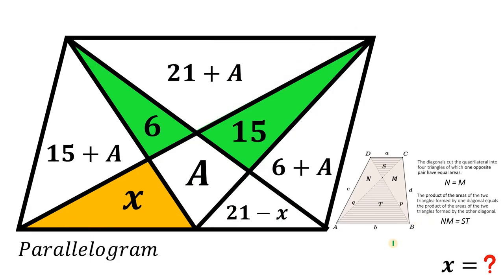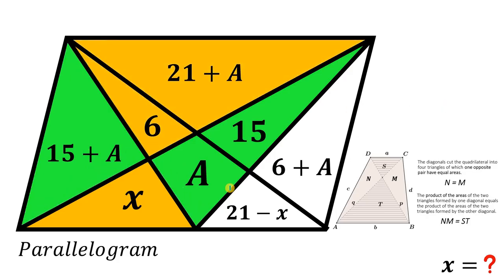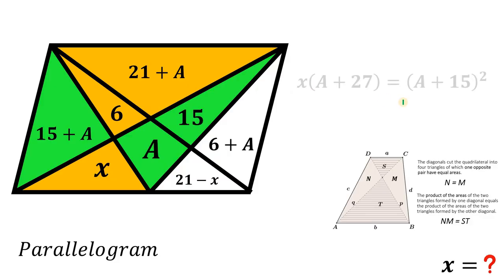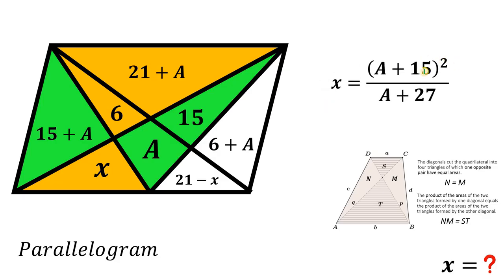Now let's apply the second concept. Using this trapezoid, the product of the green region times a plus 27 equals the product of a plus 15 squared. So x times (a + 27) equals (a + 15) squared, giving us x equals (a + 15) squared all over (a + 27).